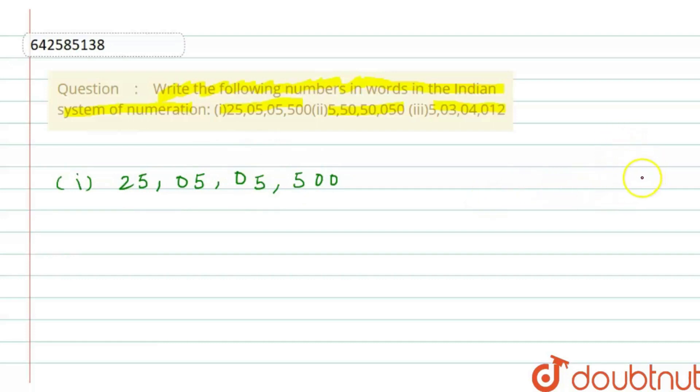Then thousand, ten thousand, then comma, then lakh, ten lakh, comma, and then crore, ten crore, and in this way we proceed forward. In the Indian system of numeration, numbers are written in words like this.